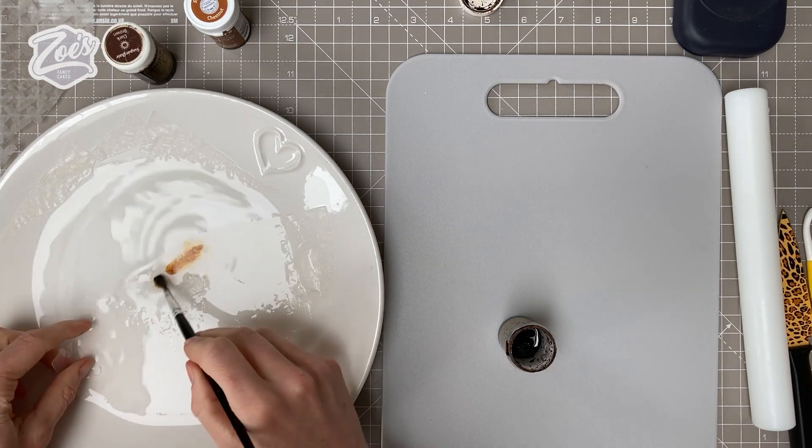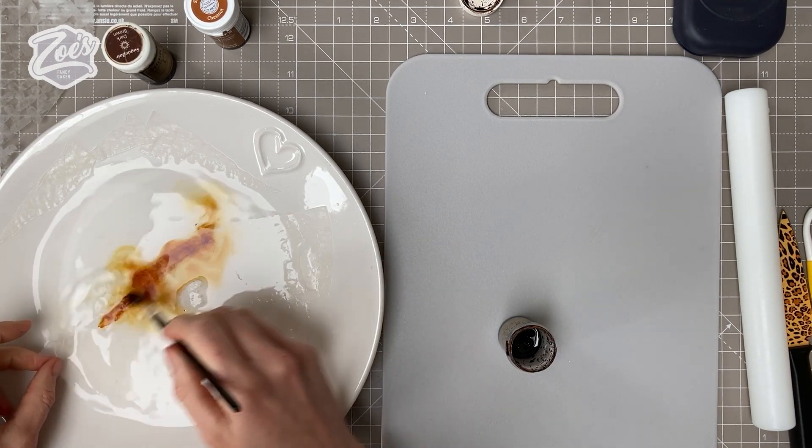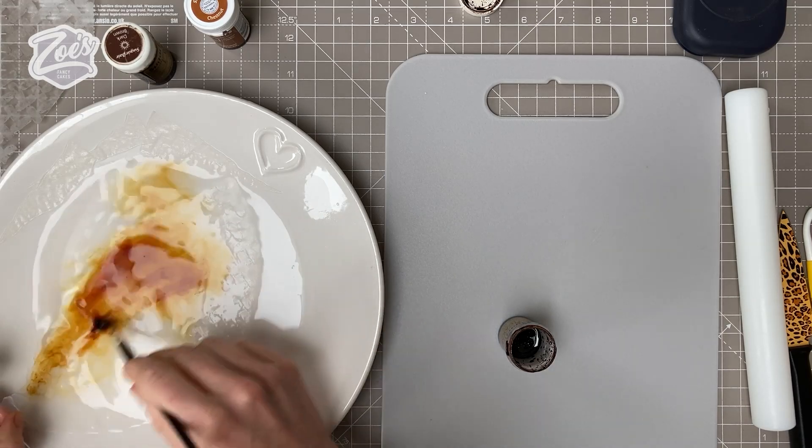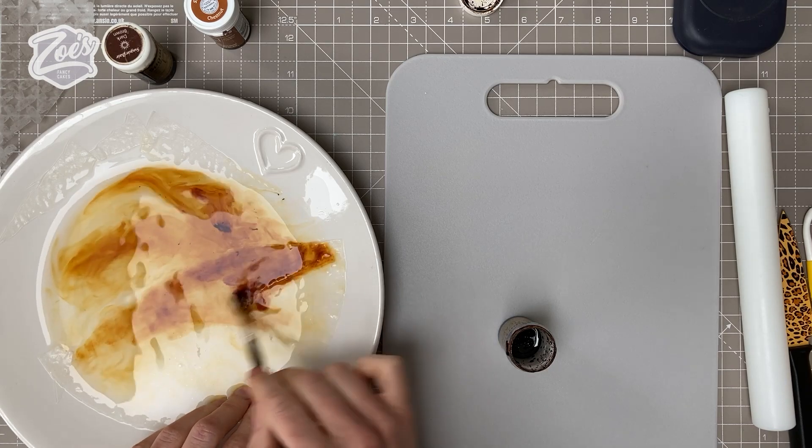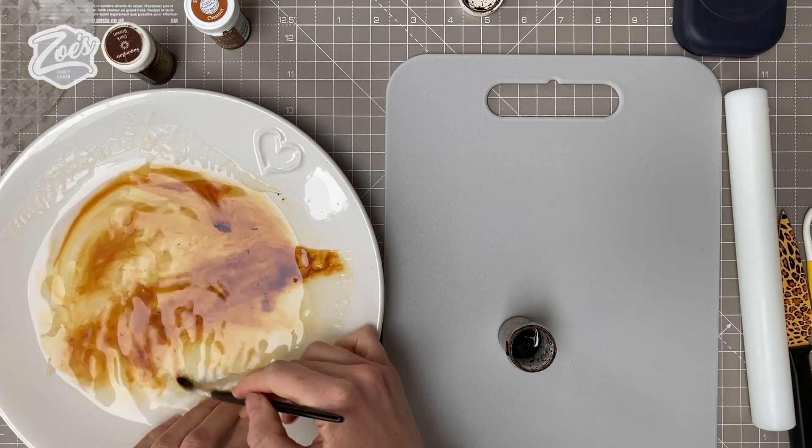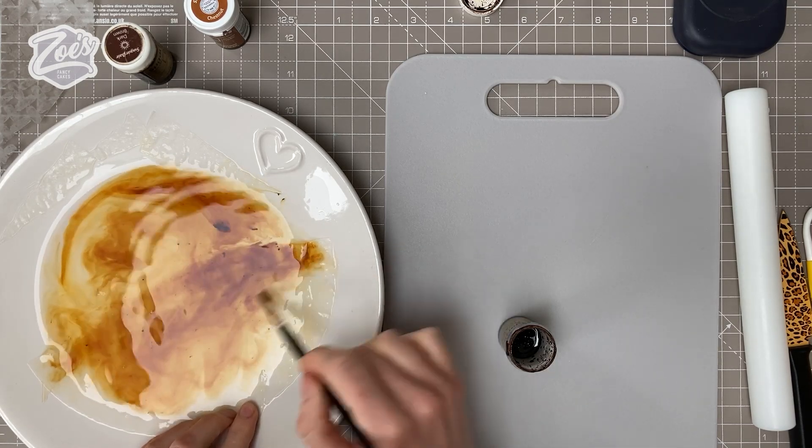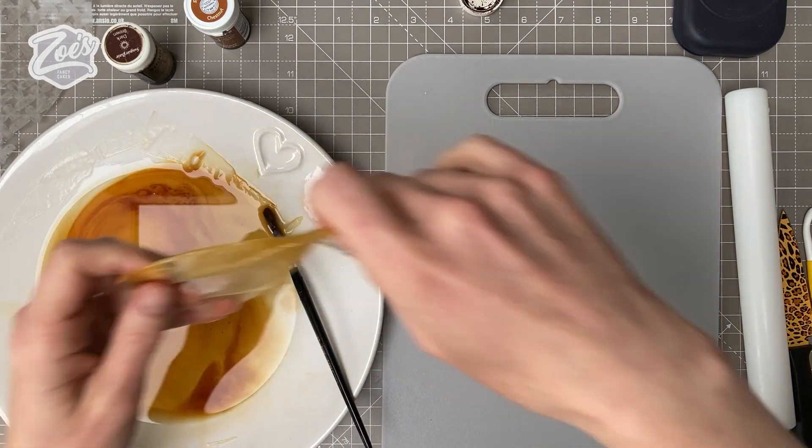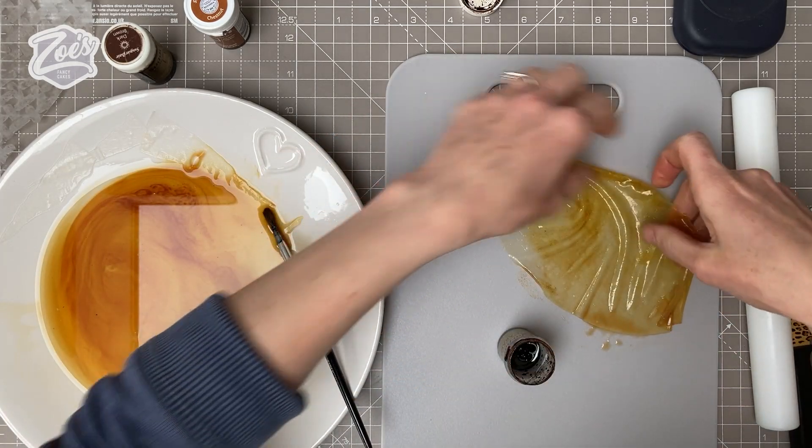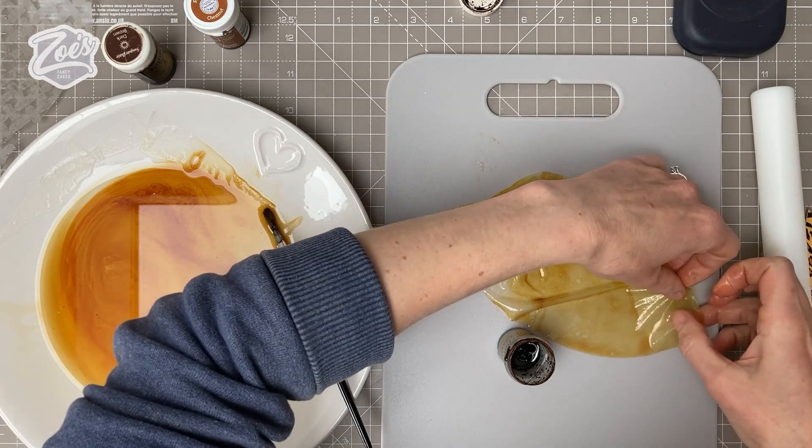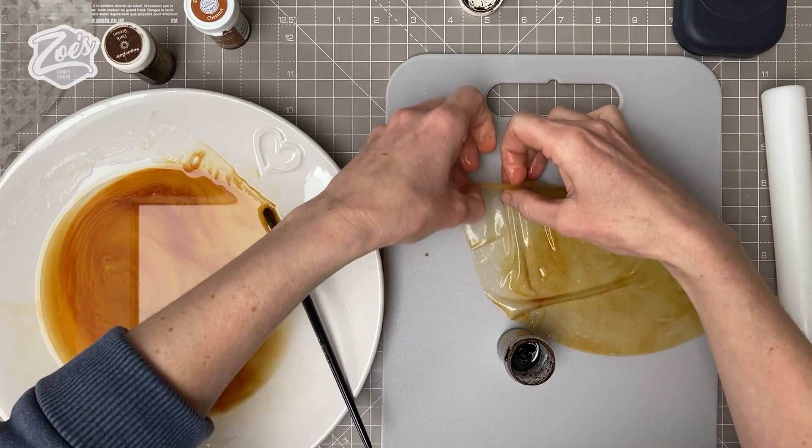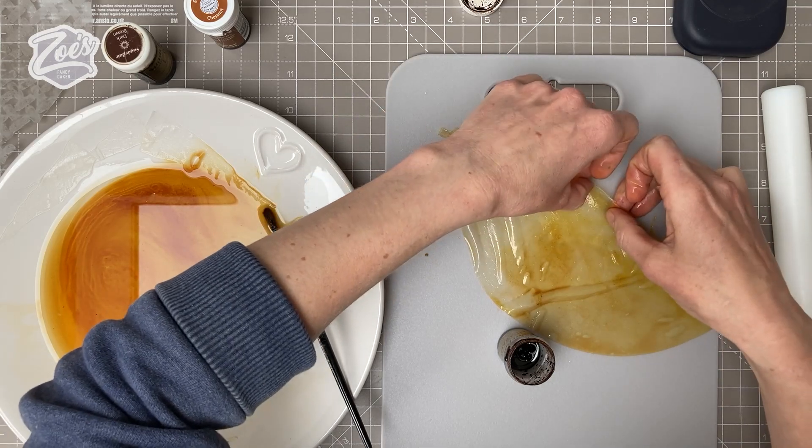I'm going to add some food color to the water. This is the caramel ivory color. The more food color you put in the water, the stronger that color will become. I want it a little bit transparent still, so I don't want to add too much. Now I've taken it out, it's very flexible. You can put it down on greaseproof paper.